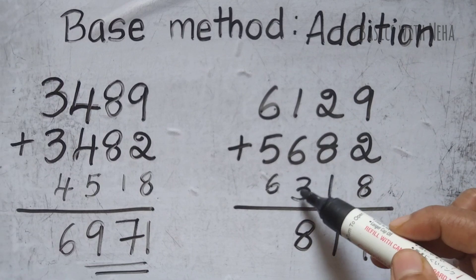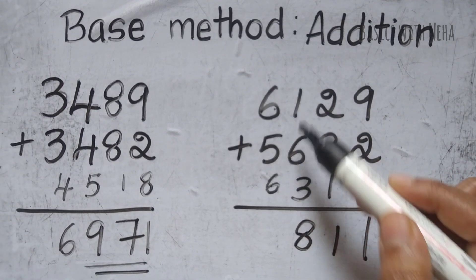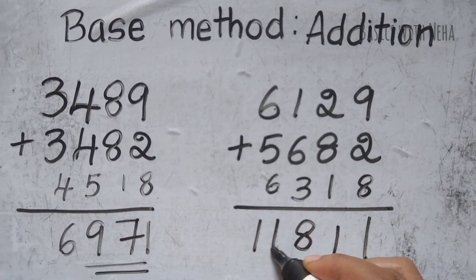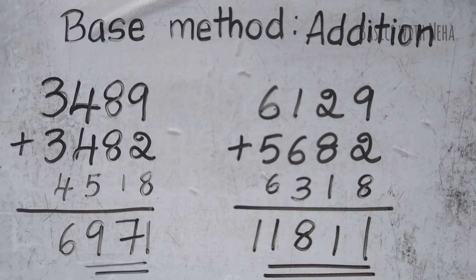I have to subtract 1 because I have performed a subtraction. I have done the borrowing here. So it will be 11. So my final answer is 11,811.